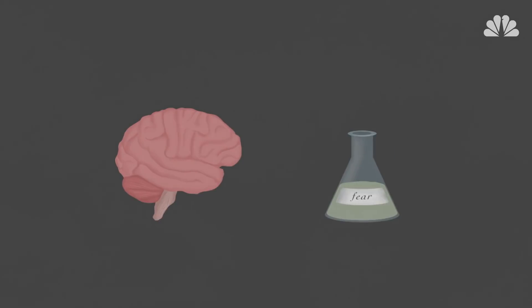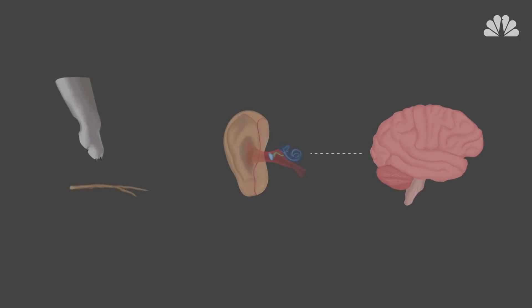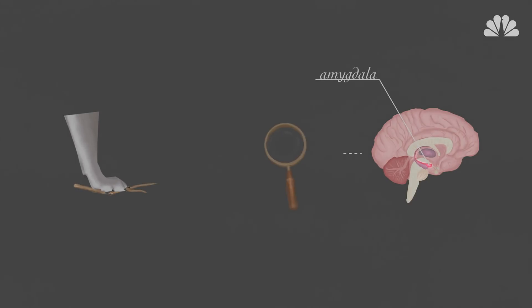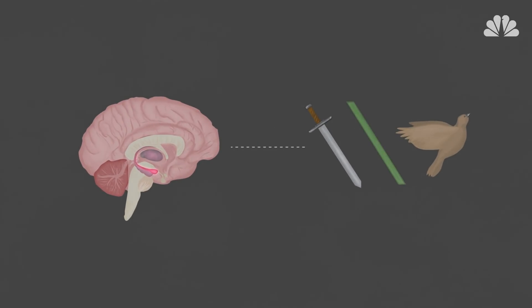At its root, fear is just a chemical reaction in your brain. When your senses perceive a possible threat, like the sound of a snapped twig in the woods, your amygdala activates to assess the context of the situation. This begins what we know as the fight-or-flight response.